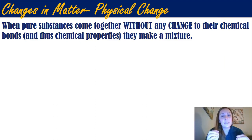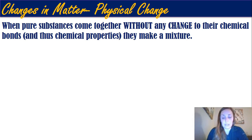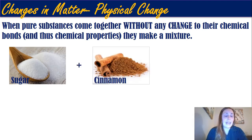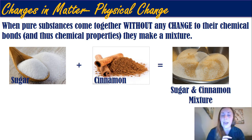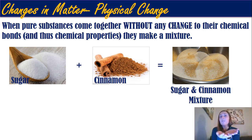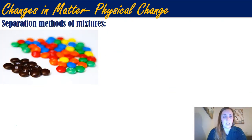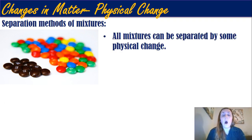When pure substances come together without any change to their chemical bonds, their chemical properties remain the same and they make a mixture. For example, if I took sugar and added cinnamon to it, I would have cinnamon and sugar — they don't chemically react or rearrange; they're just together. That's a physical change. There are ways to separate mixtures, and every single time you separate a mixture, since they are not chemically bound together, it is going to be a physical change. All mixtures can be separated by a physical change.